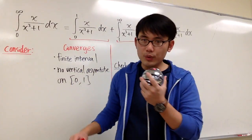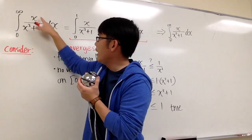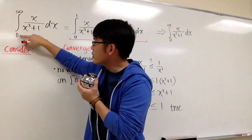We are going to see if this improper integral converges or not. This is the integral from 0 to infinity of x over x to the 3rd power plus 1 dx. This is a type 1 situation because we have an infinite interval.